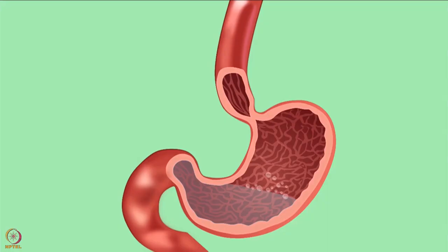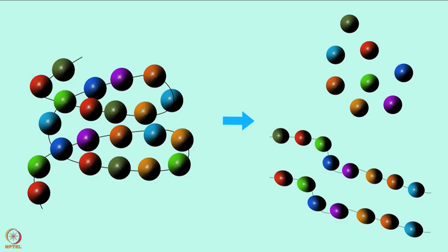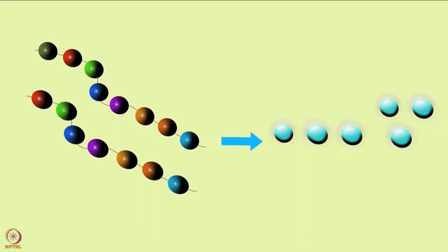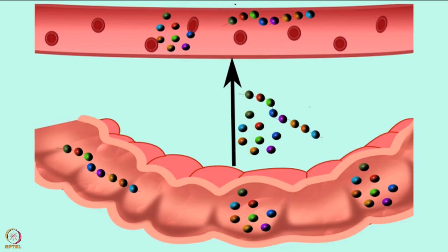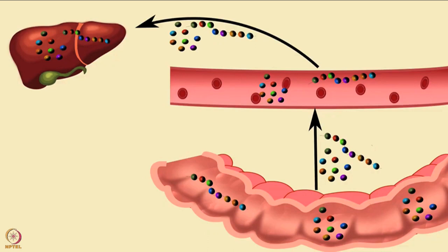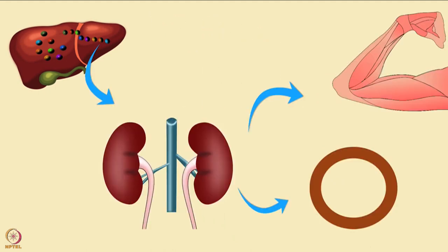Protein digestion starts in the stomach with hydrochloric acid and pepsin. They begin breaking down proteins into polypeptides and single amino acids. These polypeptides and amino acids travel to the small intestine, where polypeptides are further broken down by pancreatic enzymes. Amino acids and short peptides then cross the intestinal wall, enter the bloodstream and then enter the cells, where they are used to synthesize new proteins. Some ingested amino acids and peptides are also delivered to the liver, where they are processed and distributed to other body cells.